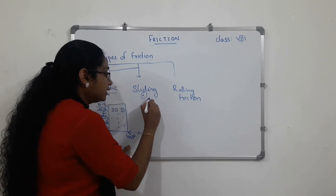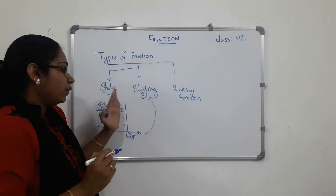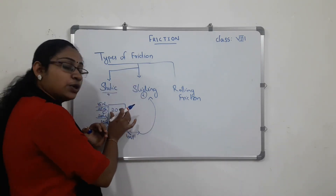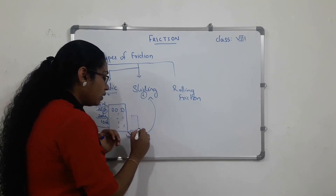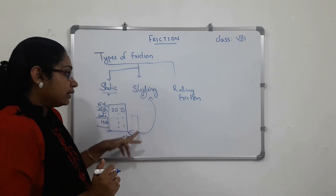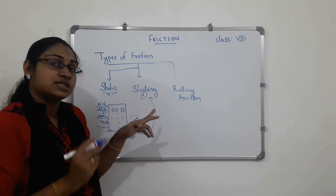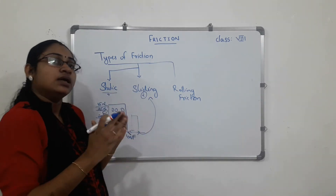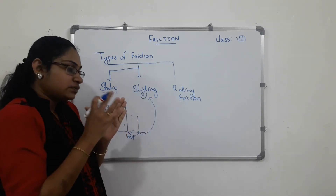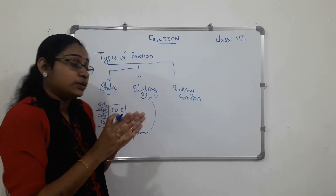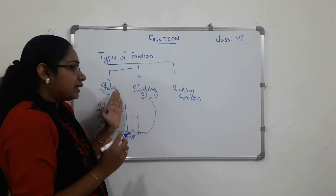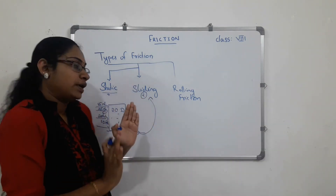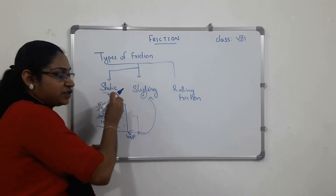We have sliding friction. If we have an object on a surface and we move it across the surface, we experience sliding friction. It means we have sliding friction when the object is in motion. Static friction is quite heavy and strong, but sliding friction is weaker — it is a smaller force.